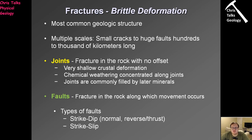Brittle deformation will occur on multiple scales — anything from small cracks which are millimeters in size, all the way up to huge faults which run for hundreds to thousands of kilometers in length. In both cases we have a fracture, a crack in the rock. The first type is a joint. With a joint, we have a fracture and two pieces of rock either side of it, but those pieces of rock do not move relative to each other. The rock cracks and the crack will typically get filled by another mineral later on.